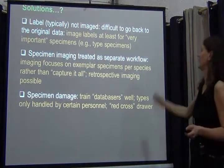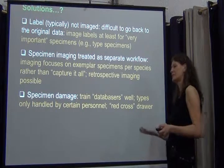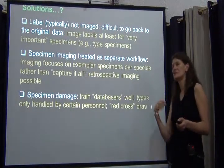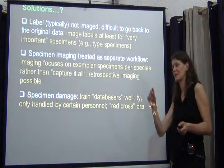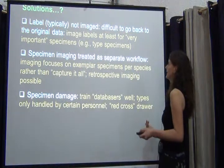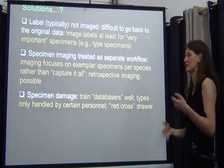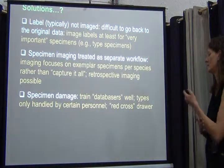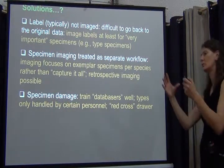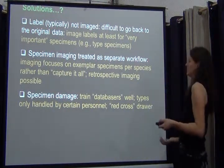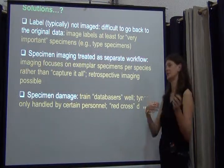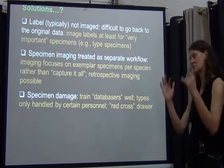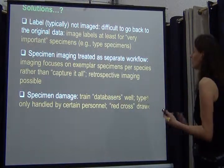Labels are typically not imaged, making it difficult to go back to your original data. What we're doing for our actual research projects — for the very important specimens, such as type specimens or specimens identified by an authority we trust that we'll be using as a reference — we typically do take images of those labels on site. For our type specimen projects in London, Paris, and at the USNM in Washington D.C., we always made sure we took pictures of the labels along with pictures of the types. This also allowed us to do retrospective data entry, so we didn't waste time in the museums databasing specimens. We just took the images and did the data entry back home — a better workflow.